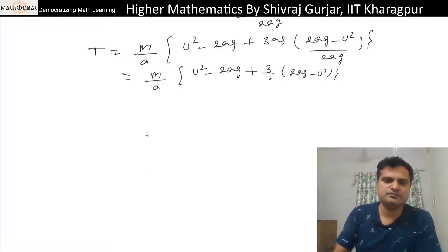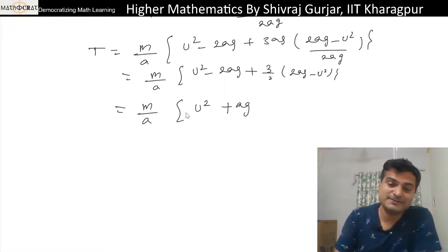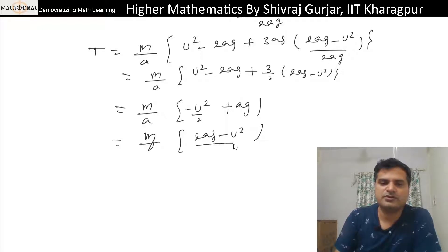Now, this will be m/a, u² + az and this is minus 3/2 u² means minus u²/2. So this is m/(2a)(2az - u²).